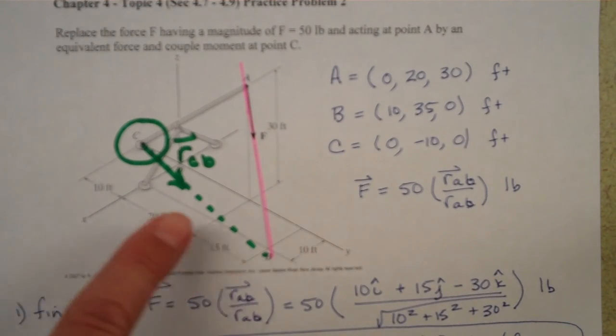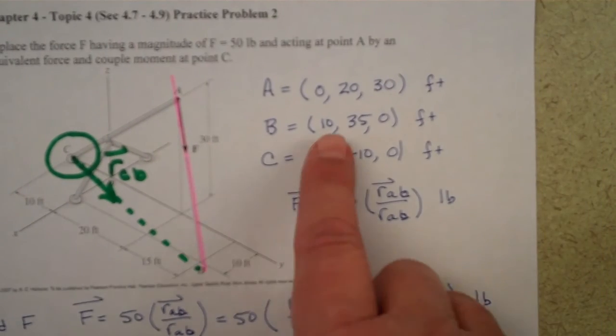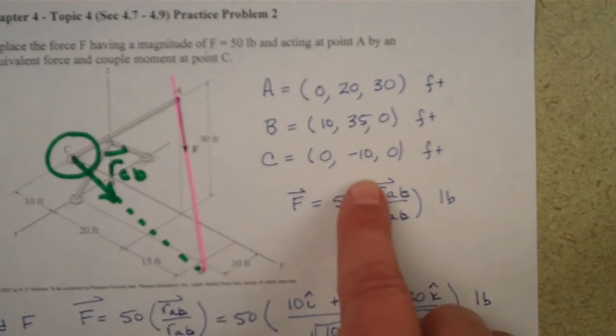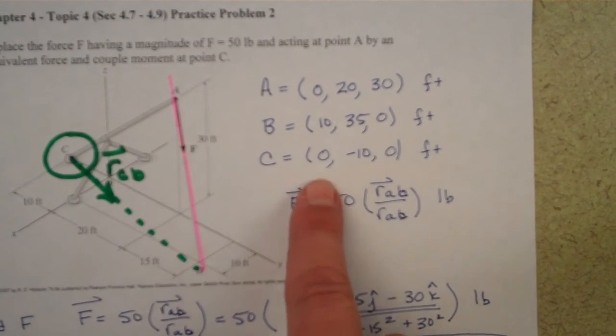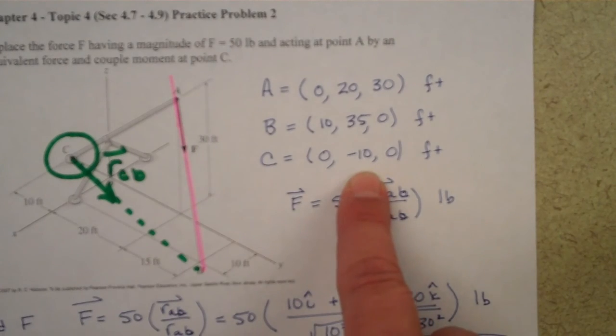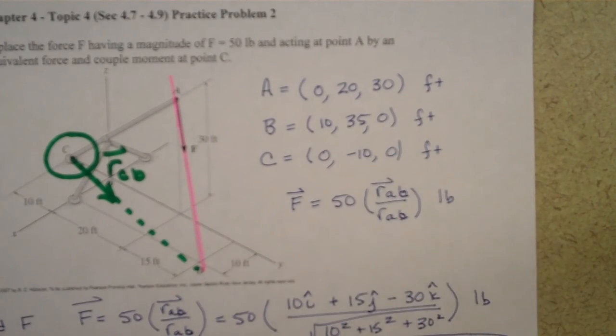And then remember it's final position minus initial, so we'll do B minus C and find out what that position vector is, 10 minus 0, 35 minus a negative 10, and 0 minus 0.